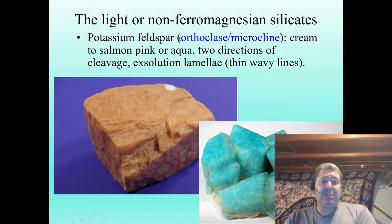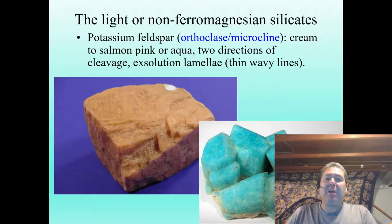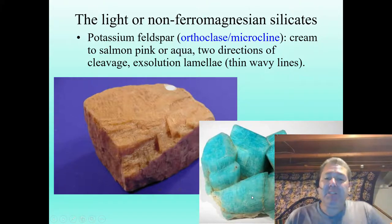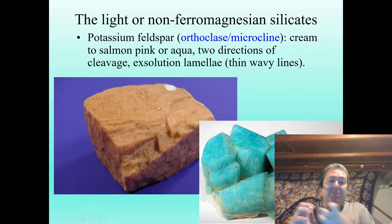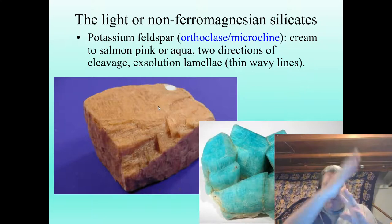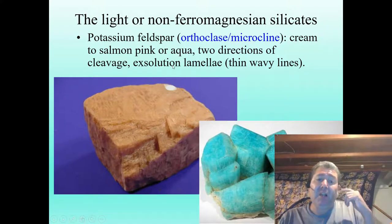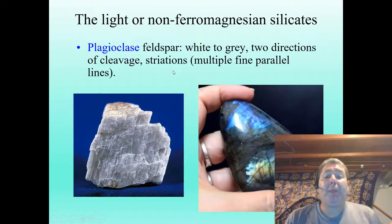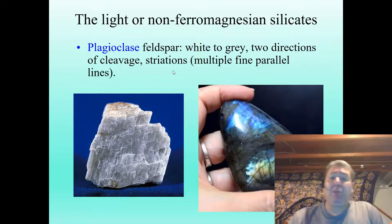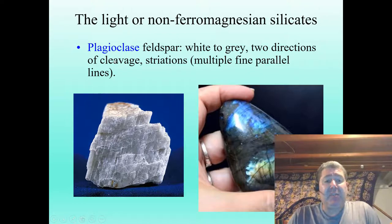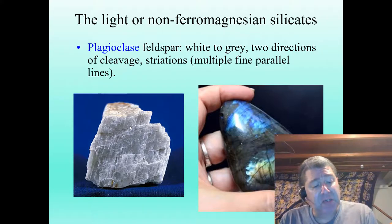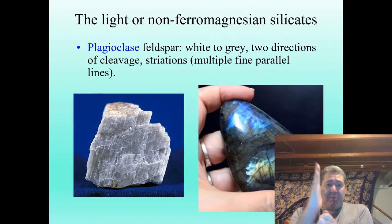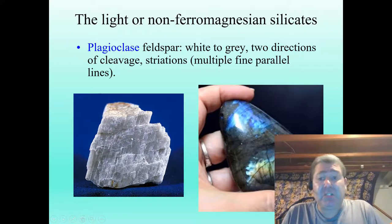Potassium feldspar (also known as orthoclase or microcline) is a non-ferromagnesian silicate. It often has a pink or salmon color, though it can also show a really cool aqua color. It has very thin wavy lines called exsolution lamellae, which form as slightly different chemistry crystallizes within the mineral. By contrast, plagioclase feldspar is usually white to gray, also has two directions of cleavage, but shows striations — very thin, perfectly parallel lines visible on its surface.